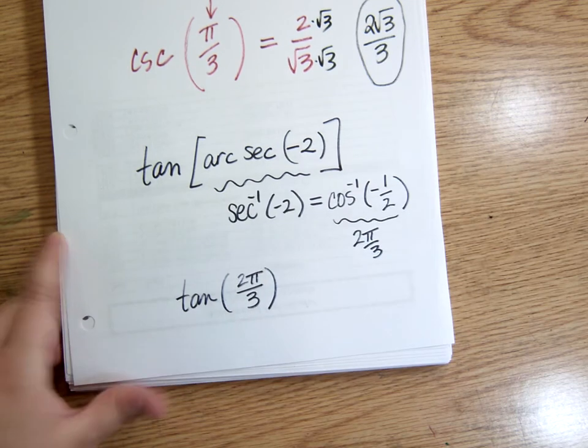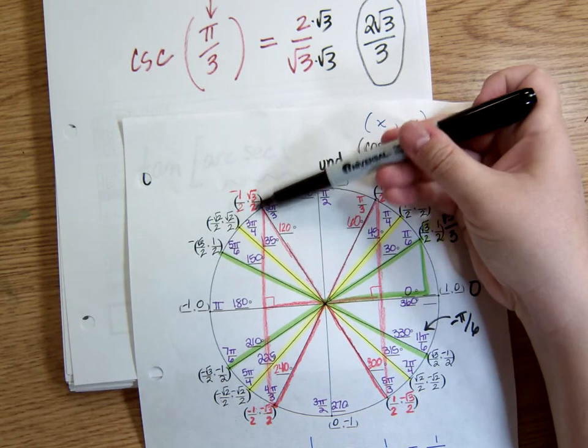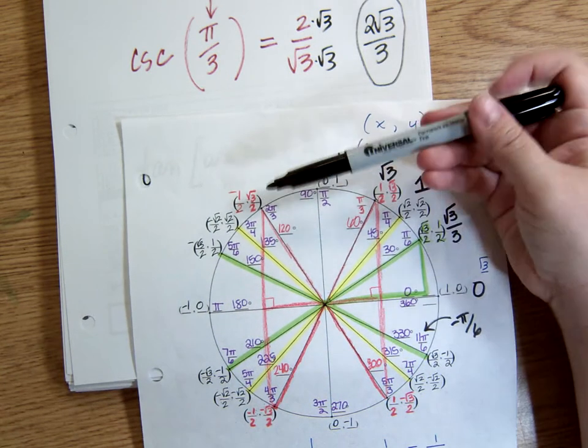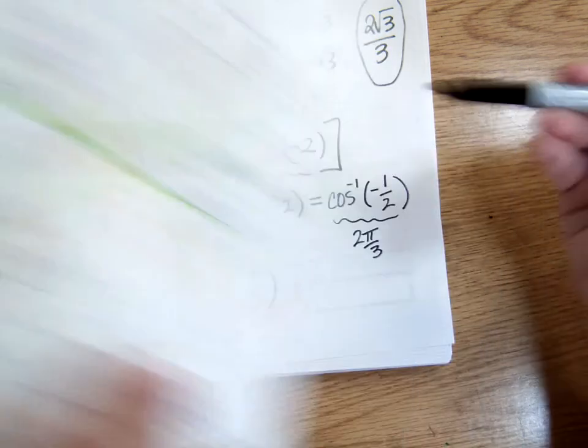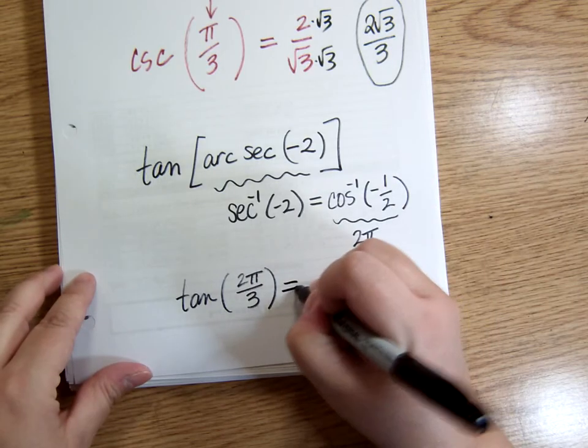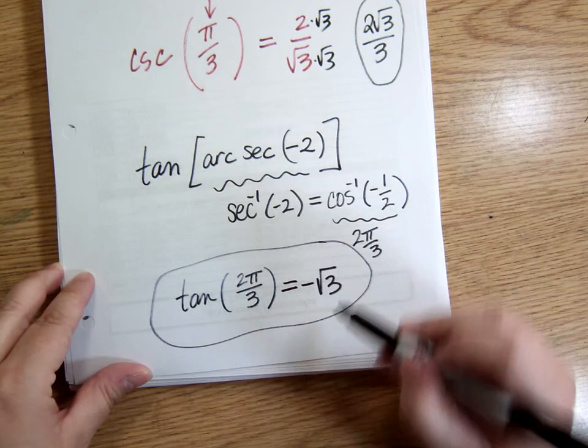And my answer for that, 2 pi over 3, as I'm putting the second coordinate over the first. So square root of 3 over 2 comes on top of negative 1 half. So square root of 3. Is it positive or negative, though? Negative. And that's my answer. This is my answer, really.